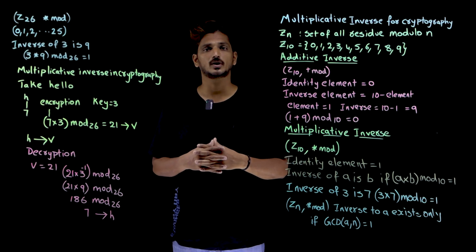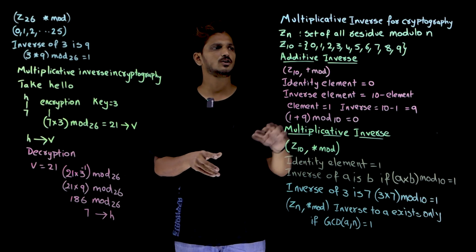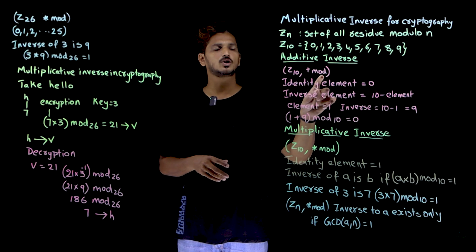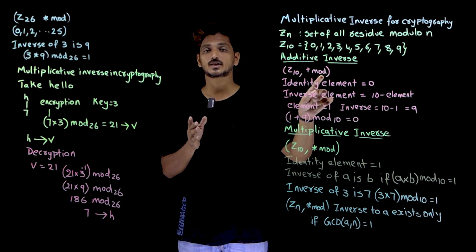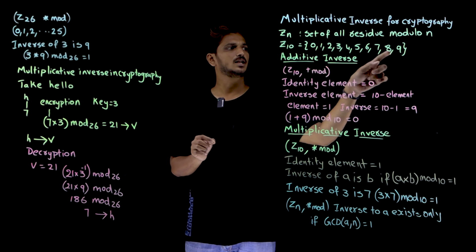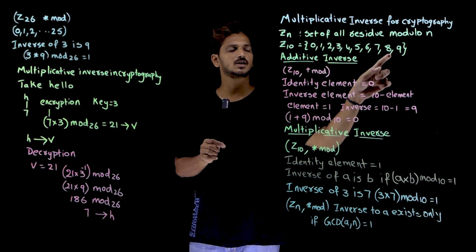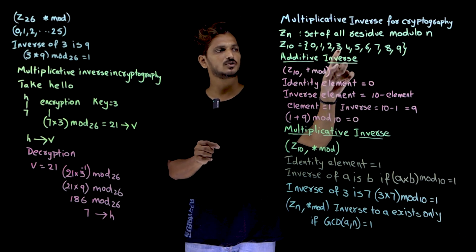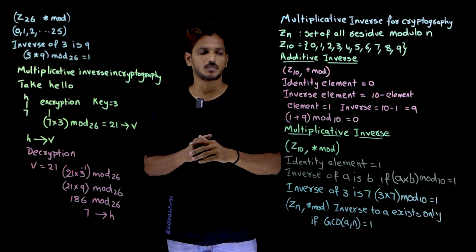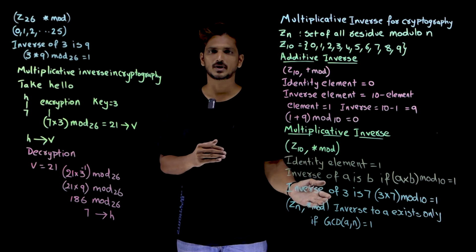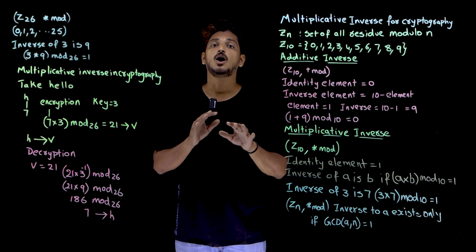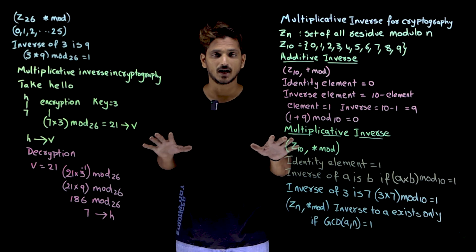One important point to understand here: in addition modulo, we have an inverse for all the elements — the inverse of 1 is 9, the inverse of 2 is 8, the inverse of 3 is 7. But in multiplication modulo operation, inverse elements do not exist for all elements.